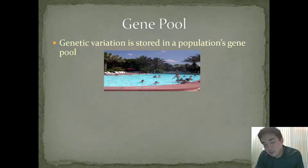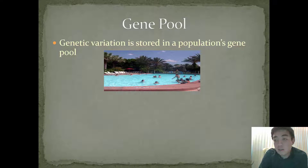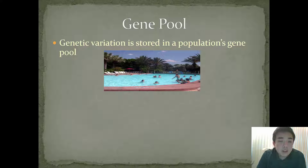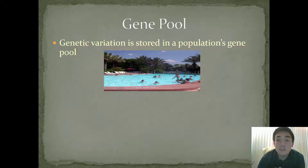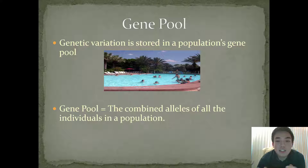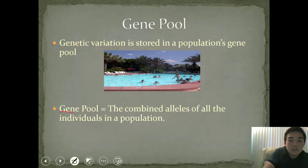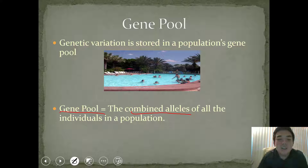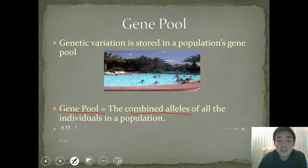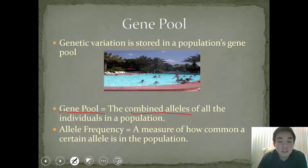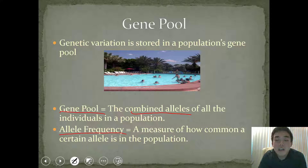So, population genetics — one of the first things you're always going to read or learn about in population genetics is a gene pool. A gene pool is where all the genetic variation of a population is stored. A gene pool is the combined alleles of all the individuals in a population. When you're looking at the individuals of a population, you generally look at something we call allele frequency, which is a measure of how common a certain allele in a population is.